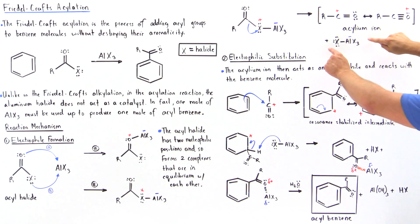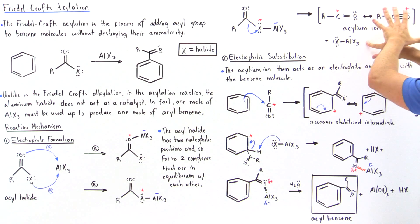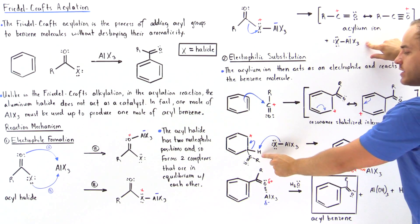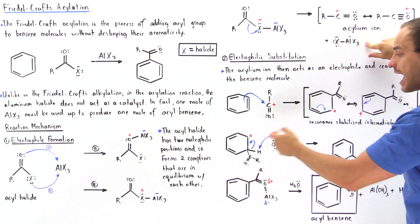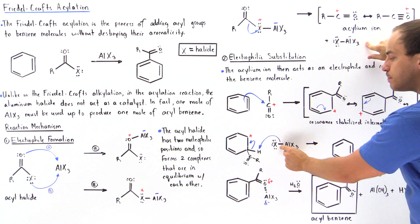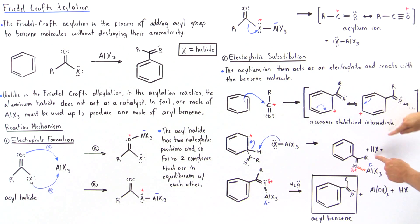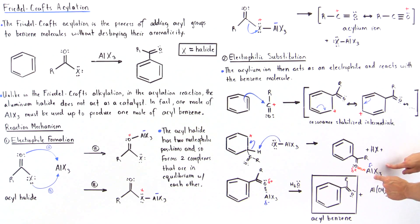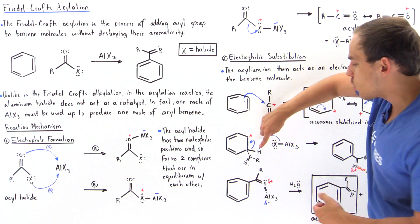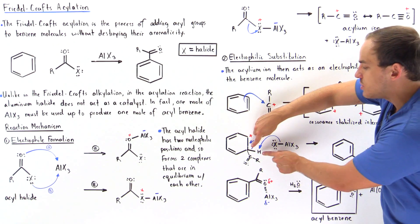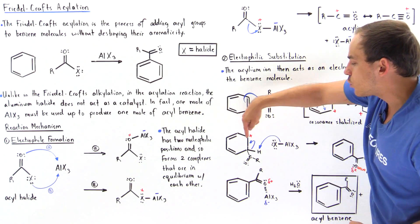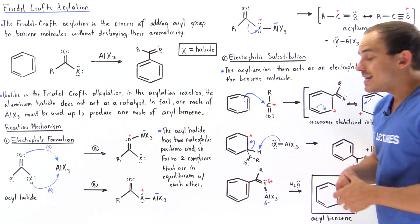The ion that was formed in the previous step now reacts and deprotonates our benzene. The bond between the halide and the aluminum is relatively weak, and it grabs this hydrogen, forming HX. In the process, we also form AlX₃ and reform our pi bond. When the H atom is grabbed, those two electrons form the pi bond.